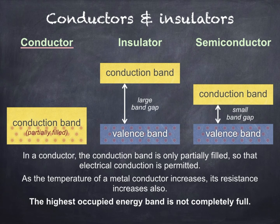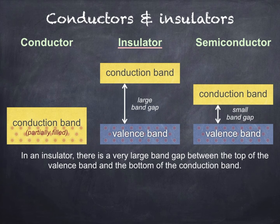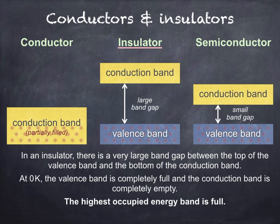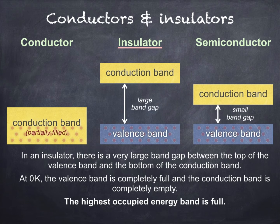In insulators, there's a very large band gap between the top of the valence band and the bottom of the conduction band. At 0 Kelvin, the valence band is completely full and the conduction band is completely empty. At higher temperatures, electrons don't normally gain enough energy to jump from the valence band to the conduction band. So with no electrons in the conduction band, conduction isn't possible. For an insulator, the highest occupied energy band — the valence band — is full.